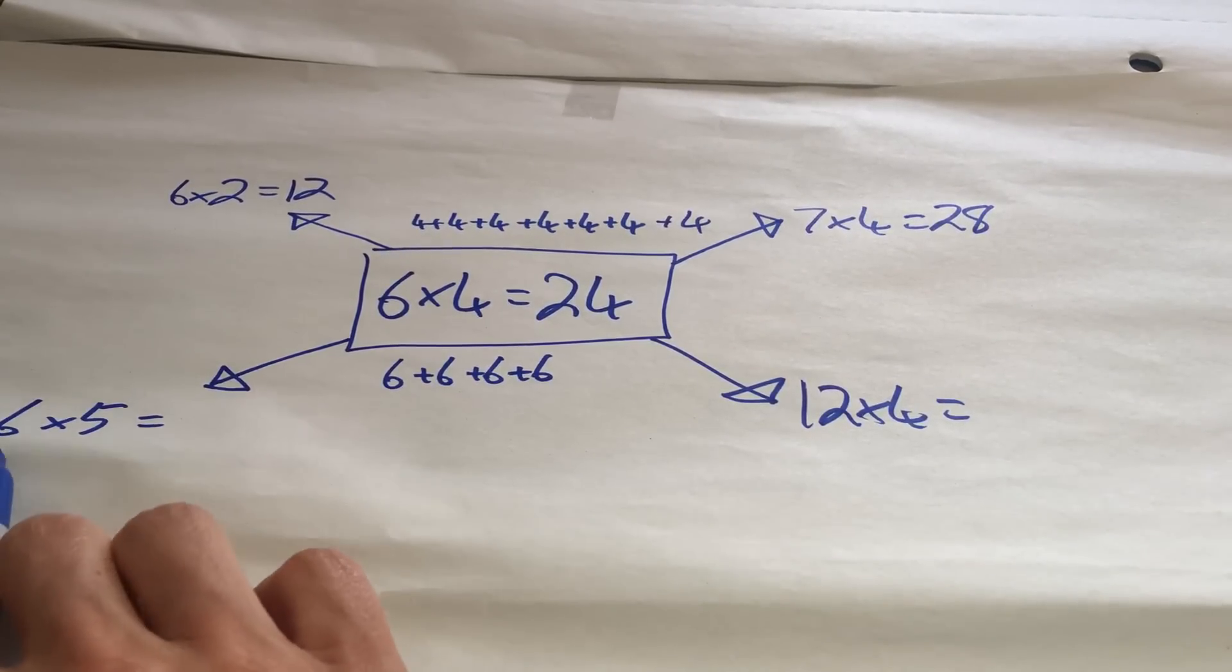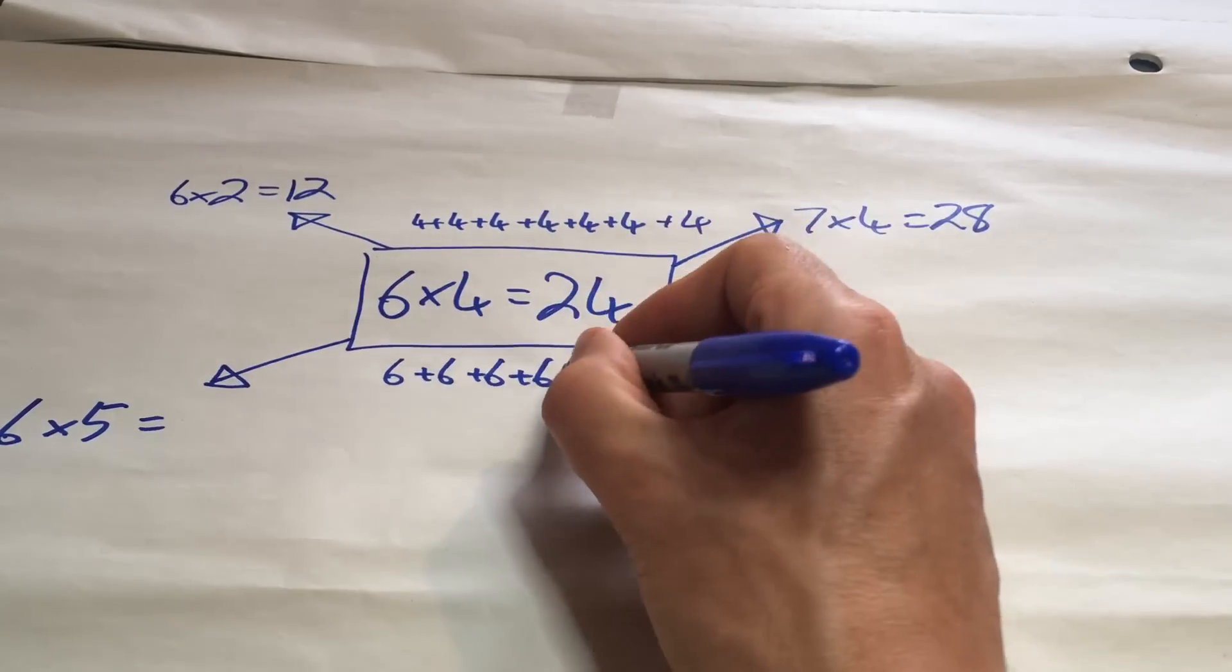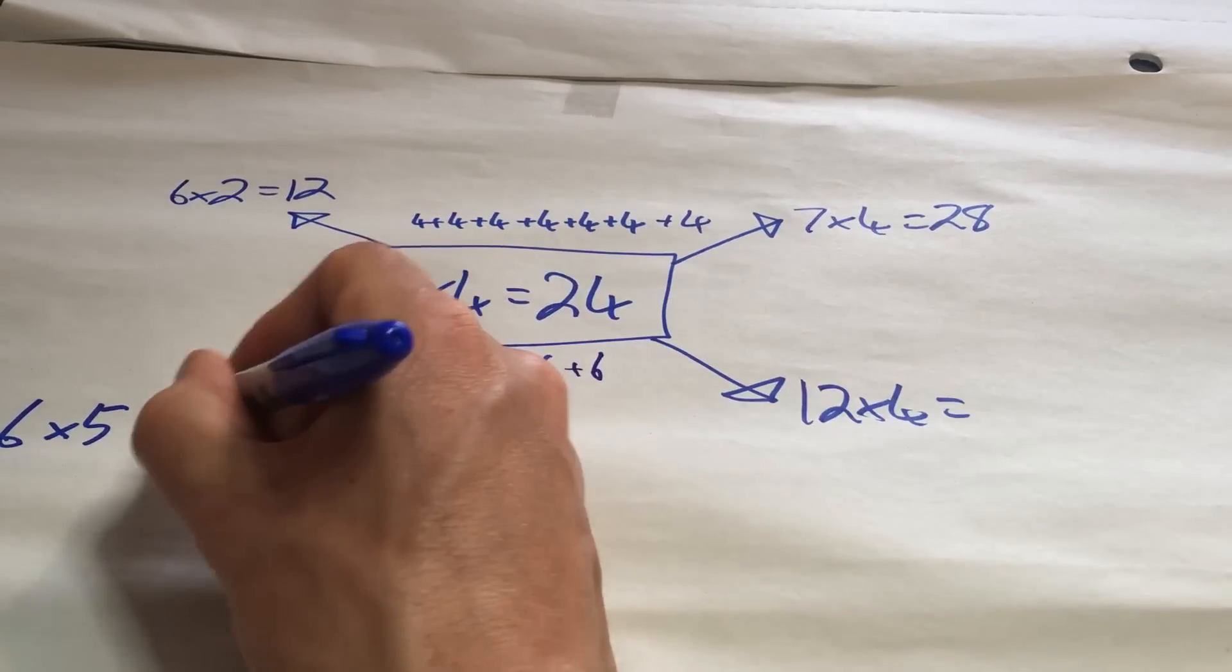Now, what about this one? 6 multiplied by 5. So, this is 1, 2, 3, 4, 6's. So, 5 6's would just be another 6. It would be 30.